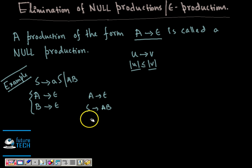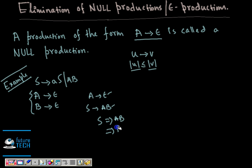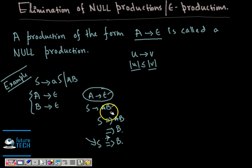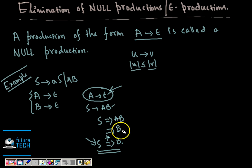Since A → ε exists and S → AB exists, we can derive AB from S using S → AB, and then using A → ε we get B. That means S can derive B in multiple steps. Now if we eliminate this epsilon production, we may not be able to get B from S. While eliminating it, we must make sure this derivation remains possible.